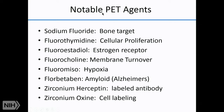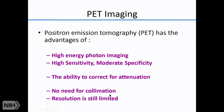There are many PET agents in development: sodium fluoride for sensitive bone imaging, fluorothymidine for cellular proliferation, fluoroestradiol to measure estrogen receptor in vivo, fluorocholine for membrane turnover, fluoromiso for measuring hypoxia, an amyloid agent for Alzheimer's disease, and labeled antibodies like Herceptin or cells labeled with zirconium oxine that can be tracked in the body after readministration. PET has huge flexibility but also its complexity.